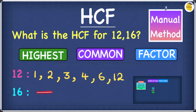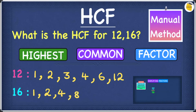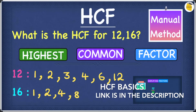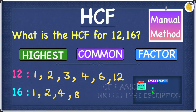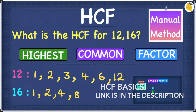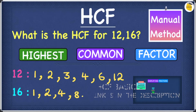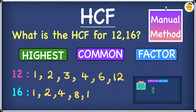Now let's find the factors for 16. The factors for 16 start with 1, then 2, 4 does go in, 8 does, and then 16 itself. So the factors of 16 are: 1, 2, 4, 8, and 16.